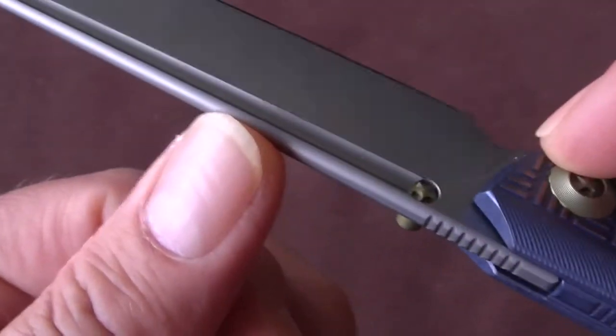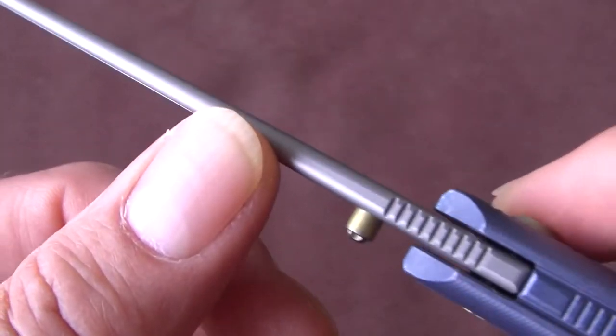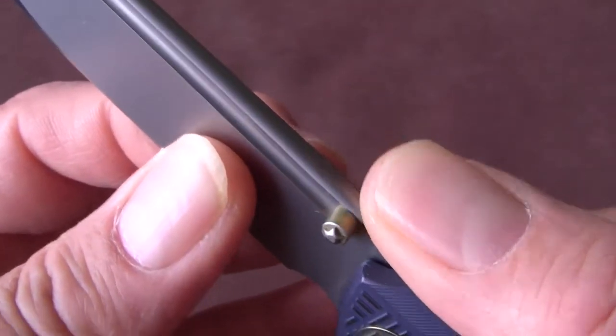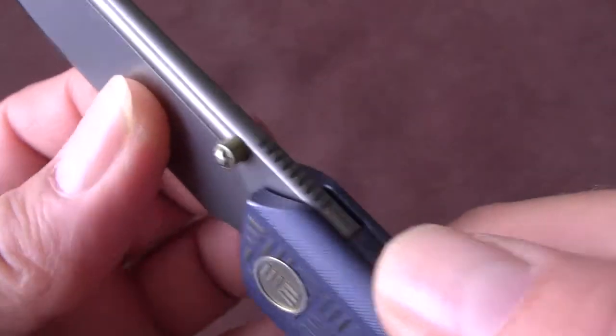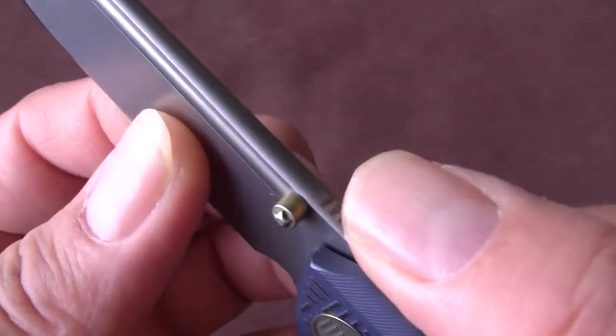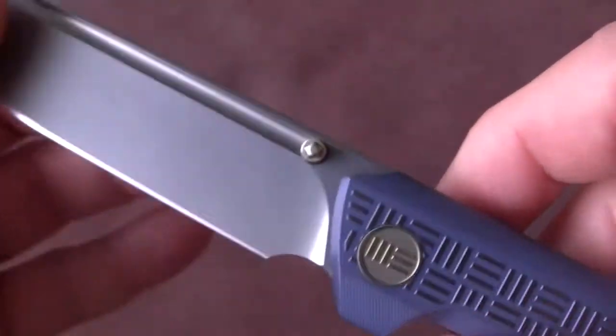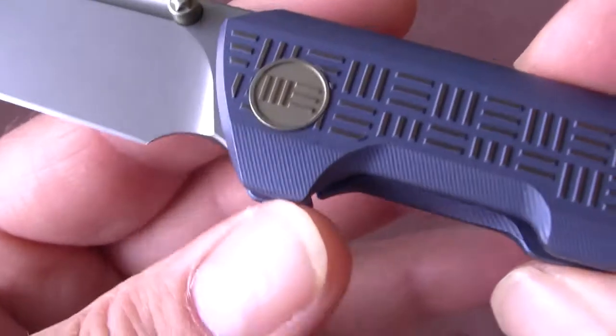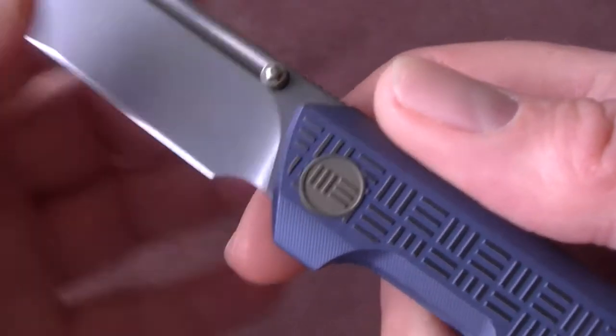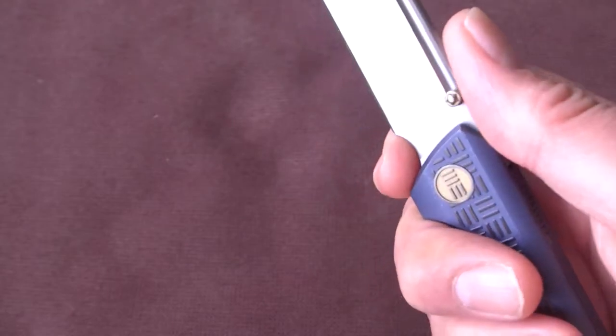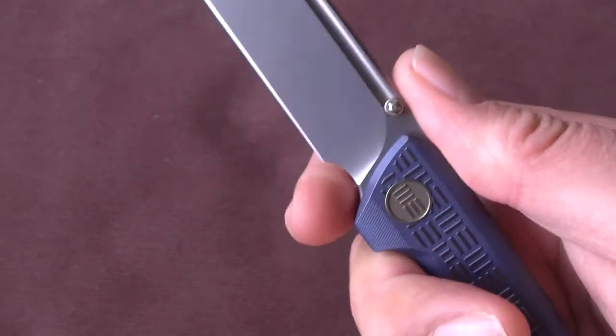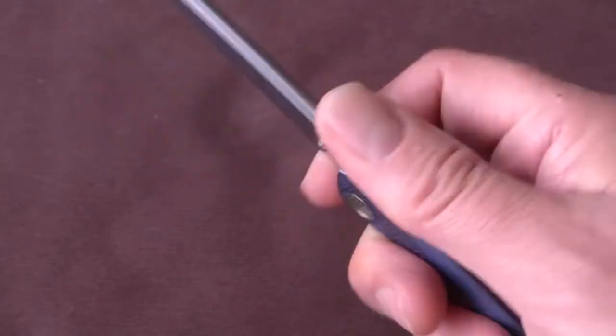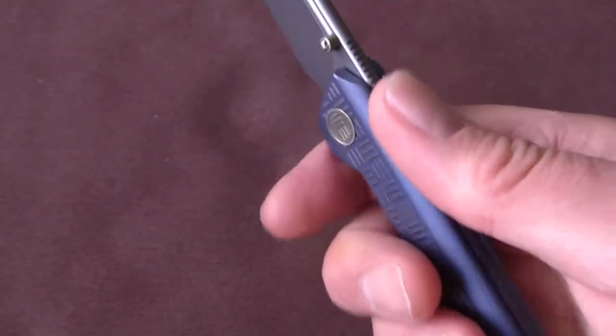The spine is completely rounded off. Jimping on top, which is not very functional. It offers a little bit of traction. It has a choil, but not really. When you have very slim fingers, with the tip of your finger you could use it as a choil, but I would not recommend it.